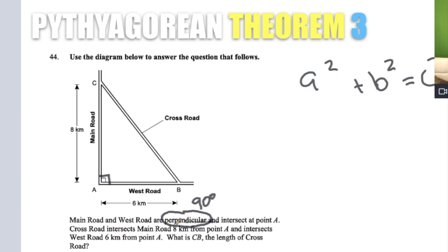Cross street intersects Main Street, Main Road, eight kilometers from point A and intersects West Road, six kilometers from point A. What is CB, the length of cross road? All right. So let's think about that there.